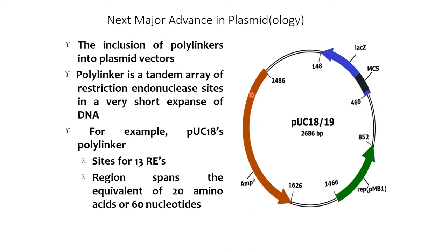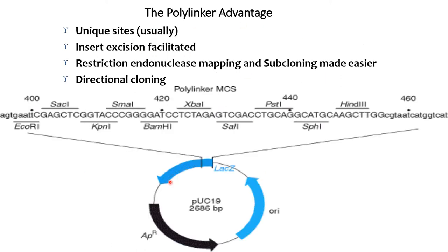A major advancement in plasmid technology is the inclusion of polylinkers into plasmid vectors. A polylinker is a tandem array of restriction endonuclease sites in a very short span of DNA. For example, in POC18, the polylinker site consists of 13 to 30 restriction enzyme sites spanning the equivalent of 60 nucleotides or 20 amino acids. Advantages of polylinkers include unique restriction sites, facilitated insert excision, easier restriction endonuclease mapping and subcloning, and directional cloning.